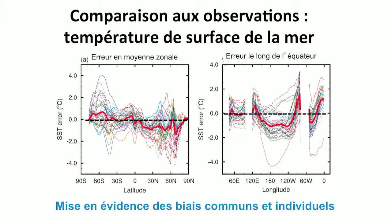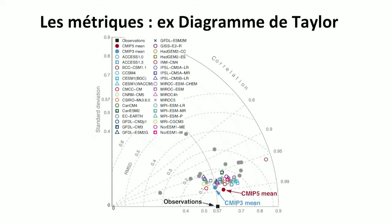The same is shown along the equator on the right-hand side picture. We see the Pacific Ocean on the left, the Indian Ocean, and the Atlantic Ocean. All the models are slightly too cold in the Pacific Ocean, and some models show completely different variations from the others, with too warm temperatures on the western side. This may show the presence of common behaviors and different behaviors in some models.